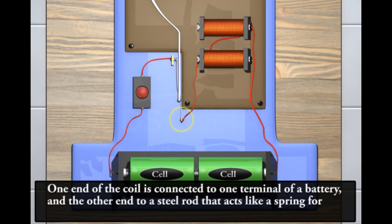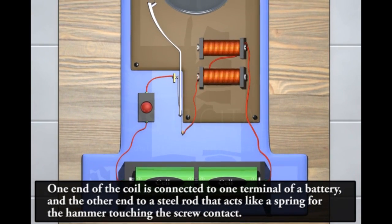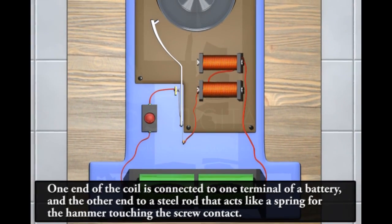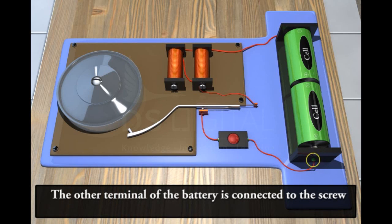The other end is connected to a steel rod that acts like a spring for the hammer touching the screw contact. The other terminal of the battery is connected to the screw contact with a switch in the middle.